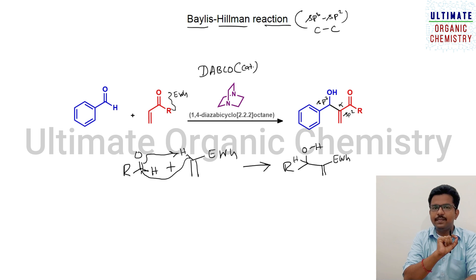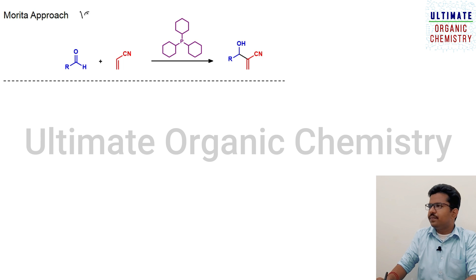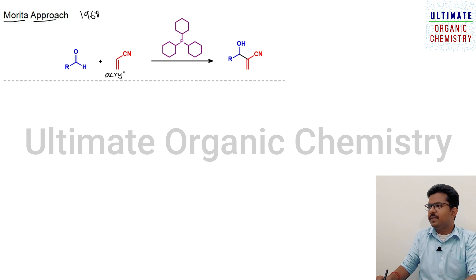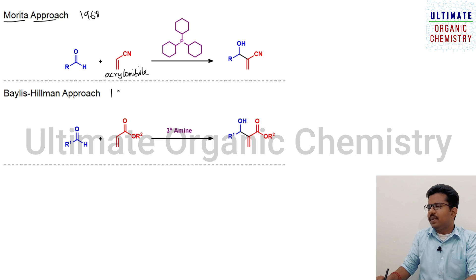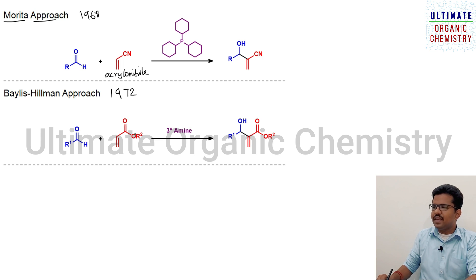Before going to the mechanism, let me discuss the brief history behind the Baylis-Hillman reaction. In 1968, Morita and coworkers reported a reaction of an aldehyde with acrylonitrile in the presence of a phosphine catalyst known as tricyclohexylphosphine, leading to the formation of a specific product. After four years, in 1972, Baylis and Hillman reported a similar reaction where an aldehyde reacts with an alkene having an ester functional group in the presence of a tertiary amine, leading to the formation of a similar product.